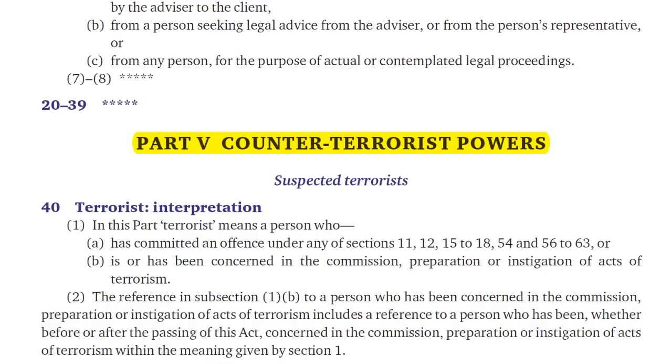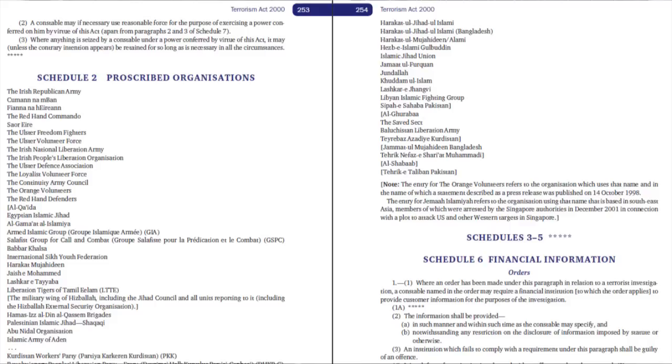In long statutes, sections may be grouped into different parts of a statute dealing with different topics. An example is the Terrorism Act 2000. We can see that Part 5 groups together sections dealing with counter-terrorist powers. In some statutes, complex or more peripheral legal provisions may be put into a schedule to the Act. A section in the Act says that the schedule has effect, and the provisions in the schedule have the same force of law as other provisions in the Act. Again, the Terrorism Act 2000 provides us with an example.